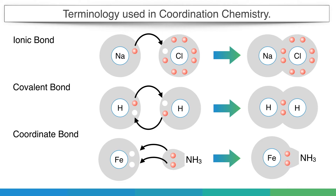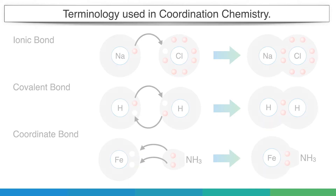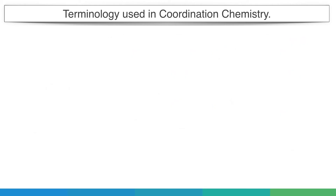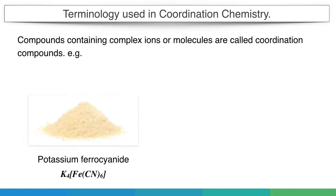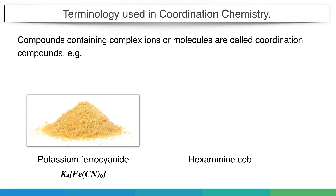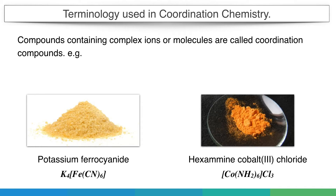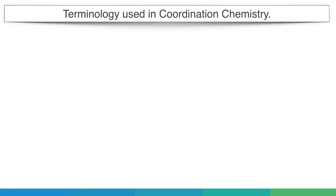Thus, these are also known as complexes. Many atoms and ions get linked together by coordinate bonds to form complex cations, anions, or complex neutral molecules. Compounds containing complex ions or molecules are called coordination compounds. For example, potassium ferrocyanide K4FeCN6 and hexamine cobalt-3 chloride. To study coordination bonds, we first need a basic idea of the names and terminologies used in coordination chemistry.